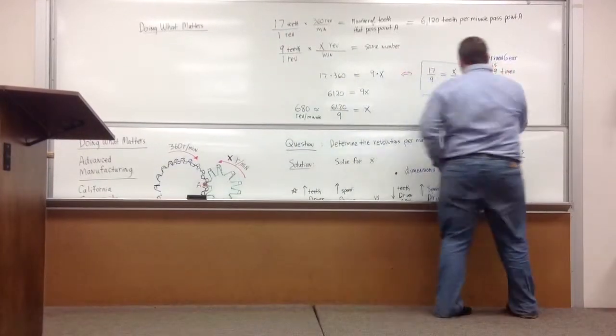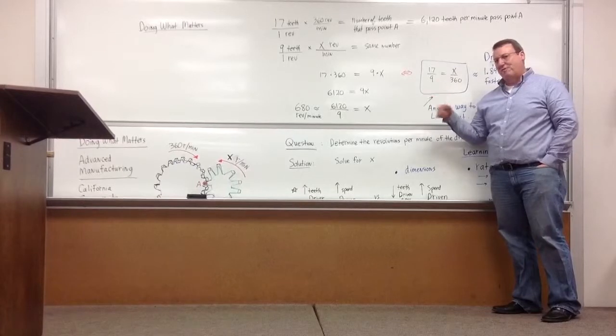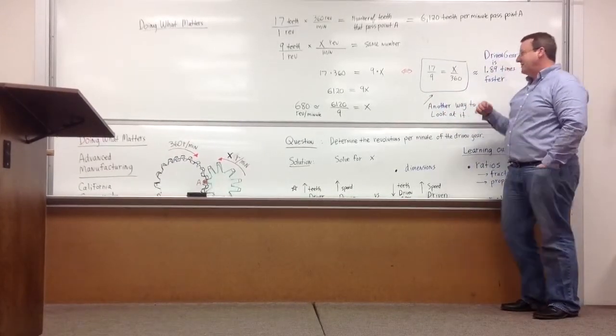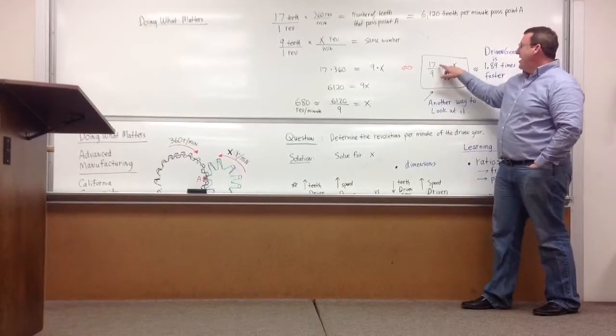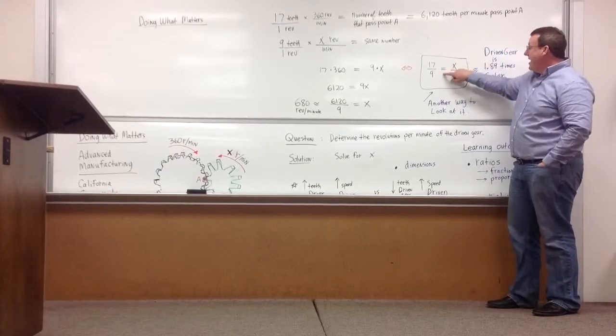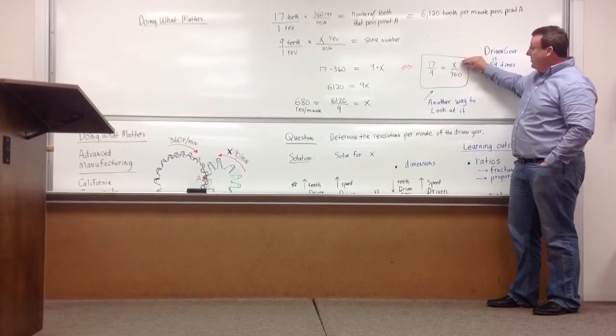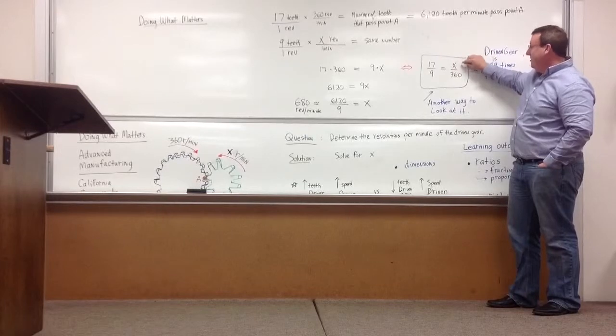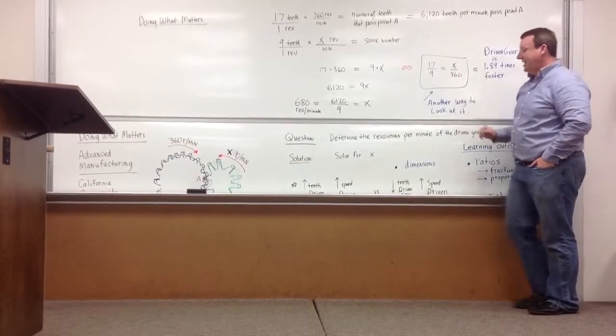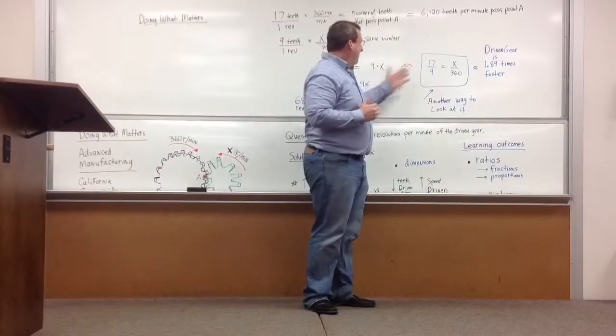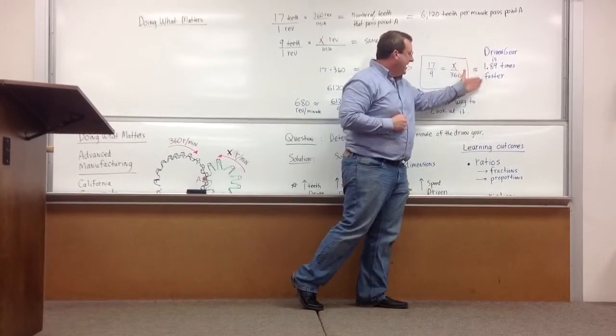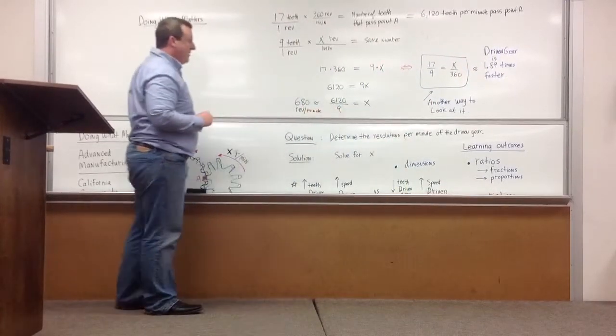Now, this is pretty straightforward. But a lot of times fractions show up, and we need to be good with fractions when we're working with math in any type of industry. You can look at the fraction here as 17 teeth compared to the 9 teeth is equal to the number of revolutions of the 9 teeth one versus the 360 revolutions. This is another way of looking at it. You can see the proportionality, the driven gear has to be 1.89 times faster than the driver gear.